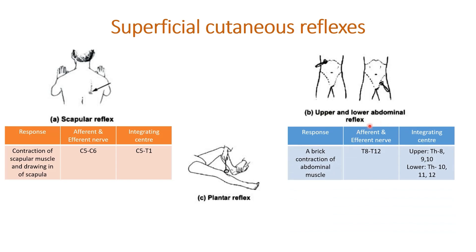The next one is the upper and lower abdominal reflexes. With the help of a key or a blunt pointed object, in the case of the upper abdominal reflex, we'll scratch below the costal margin. In the case of the lower abdominal reflex, we'll scratch the lower abdominal area. The response is the brisk contraction of the abdominal muscle.